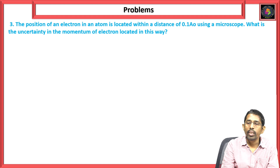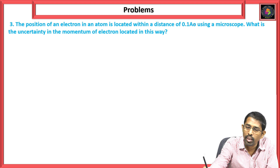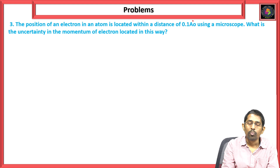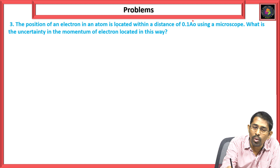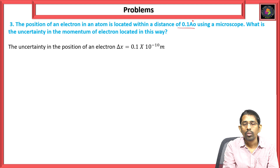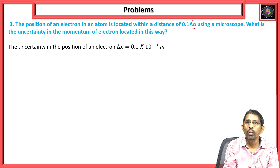The third problem: the position of an electron in an atom is located within a distance 0.1 angstroms using a microscope. What is the uncertainty in momentum of the electron? The uncertainty in position delta x is given as 0.1 × 10⁻¹⁰ meters. We are converting angstroms to meters, where 1 angstrom = 10⁻¹⁰ meters.